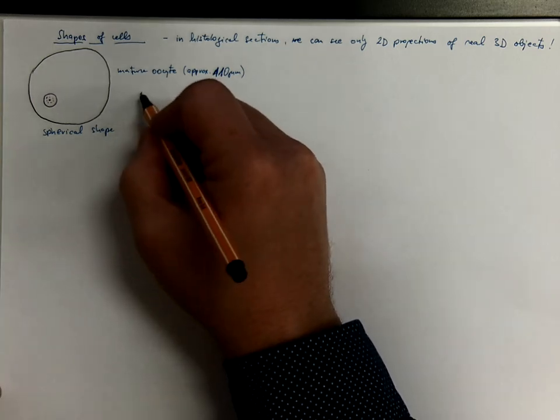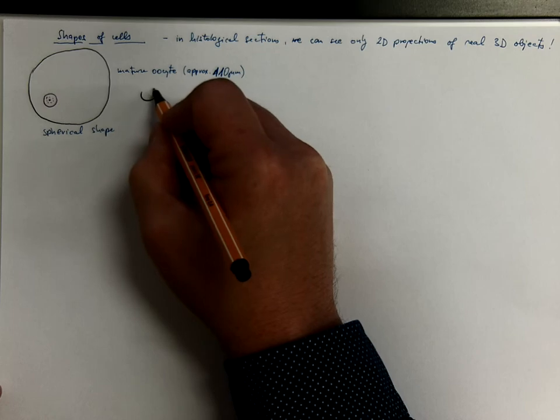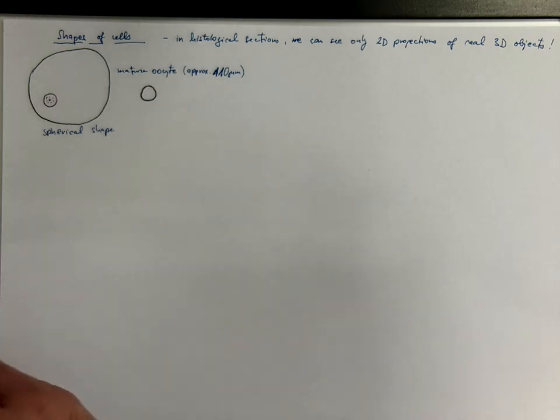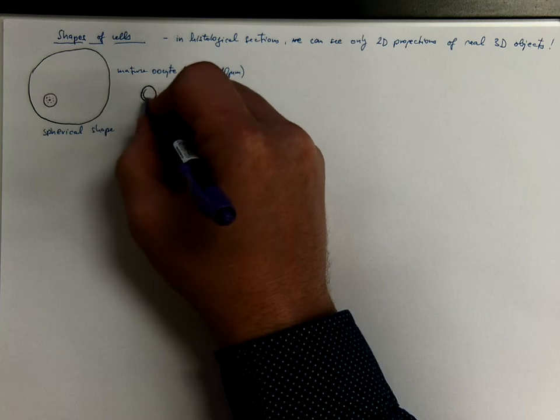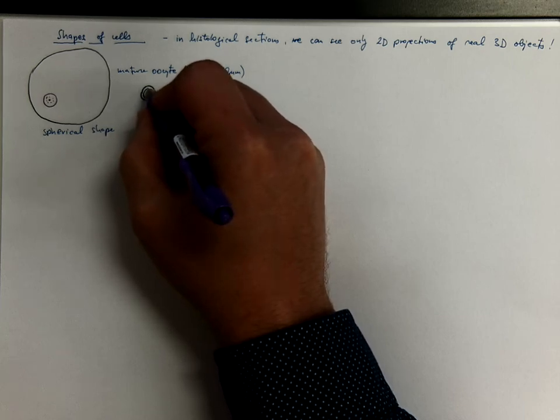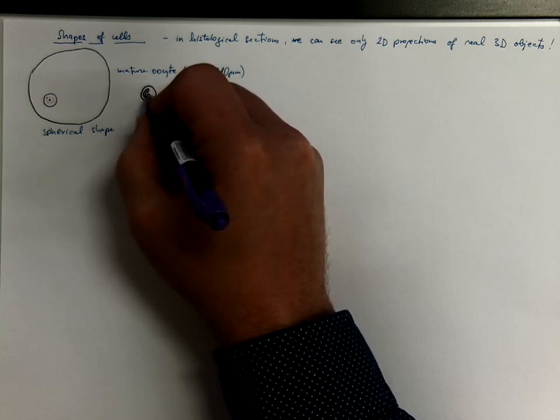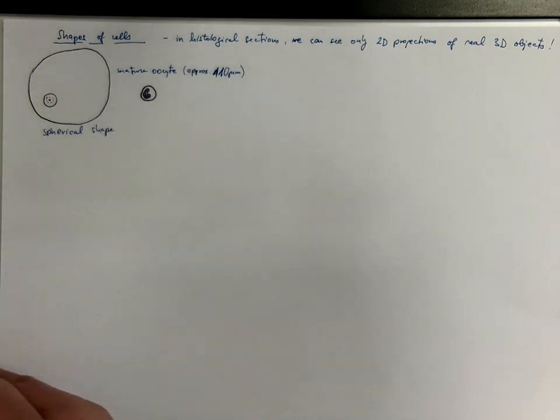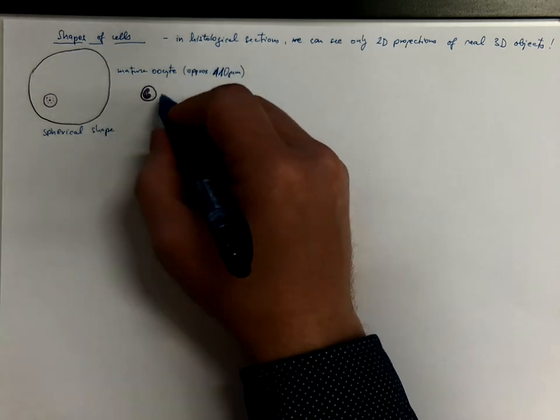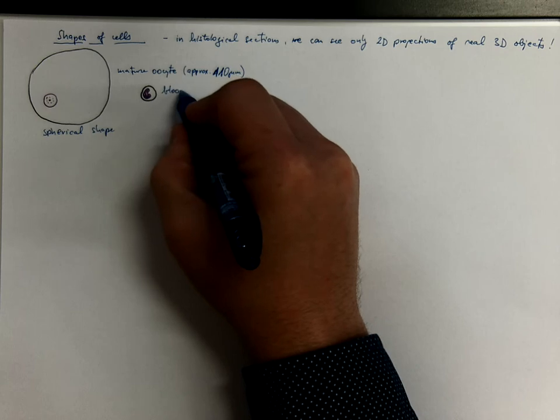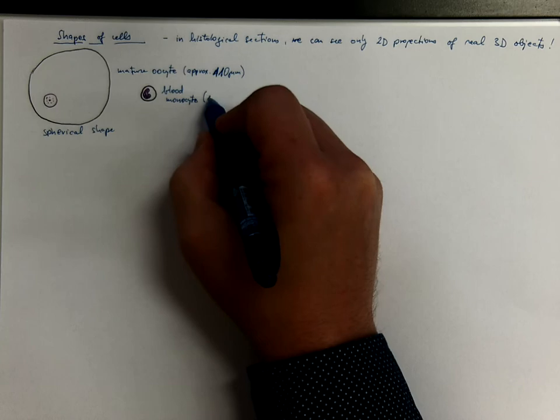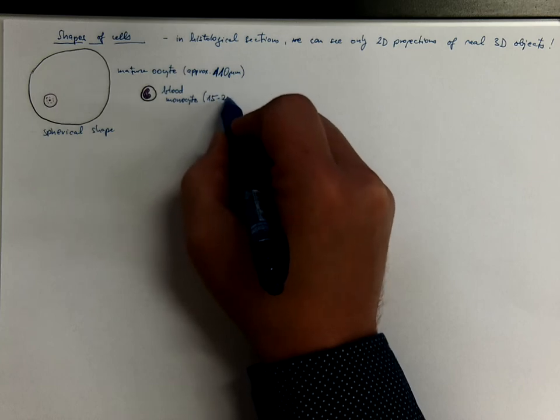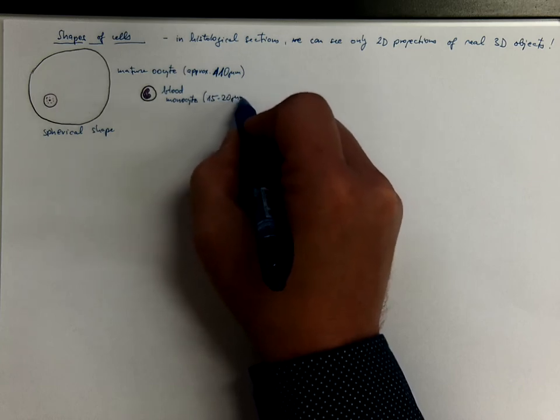There are also other cells, mainly blood elements, that are spherical round shaped. Such as my next example which would be blood monocyte, which is the largest cell of the circulating peripheral blood, with the diameter ranging between 15 to 20 micrometers.